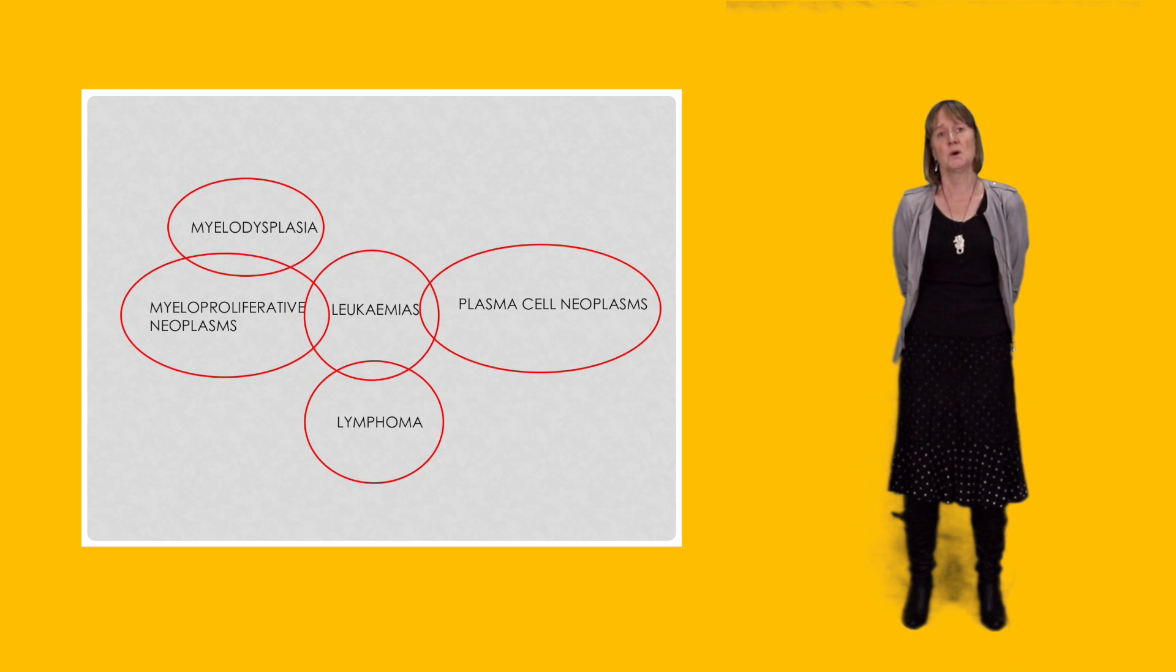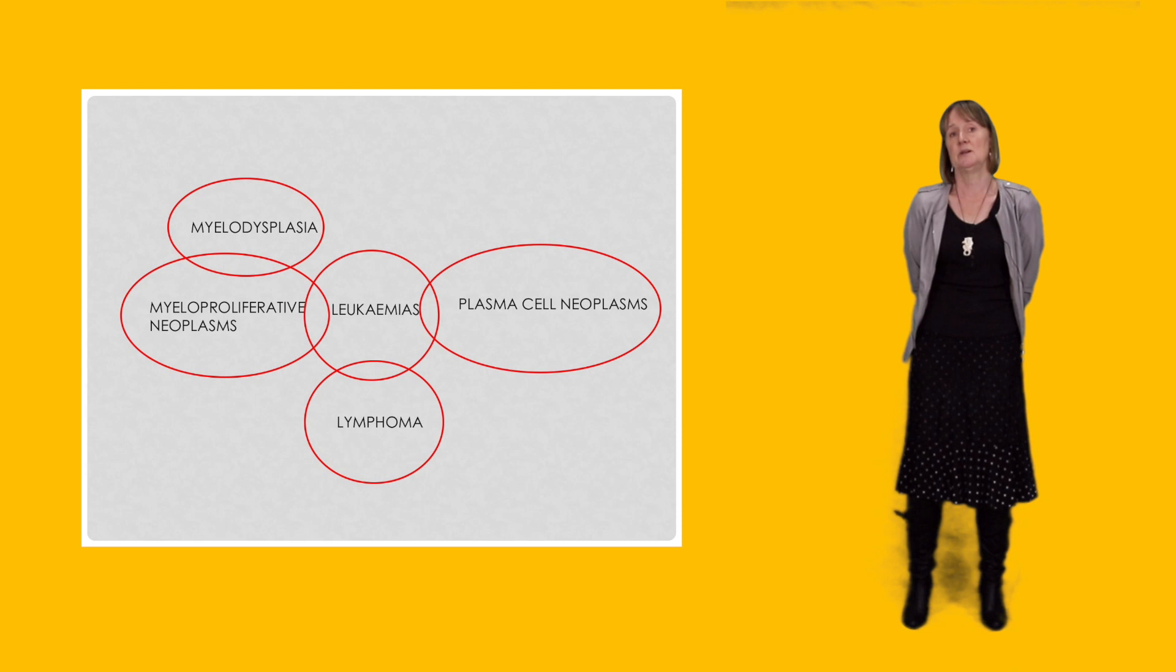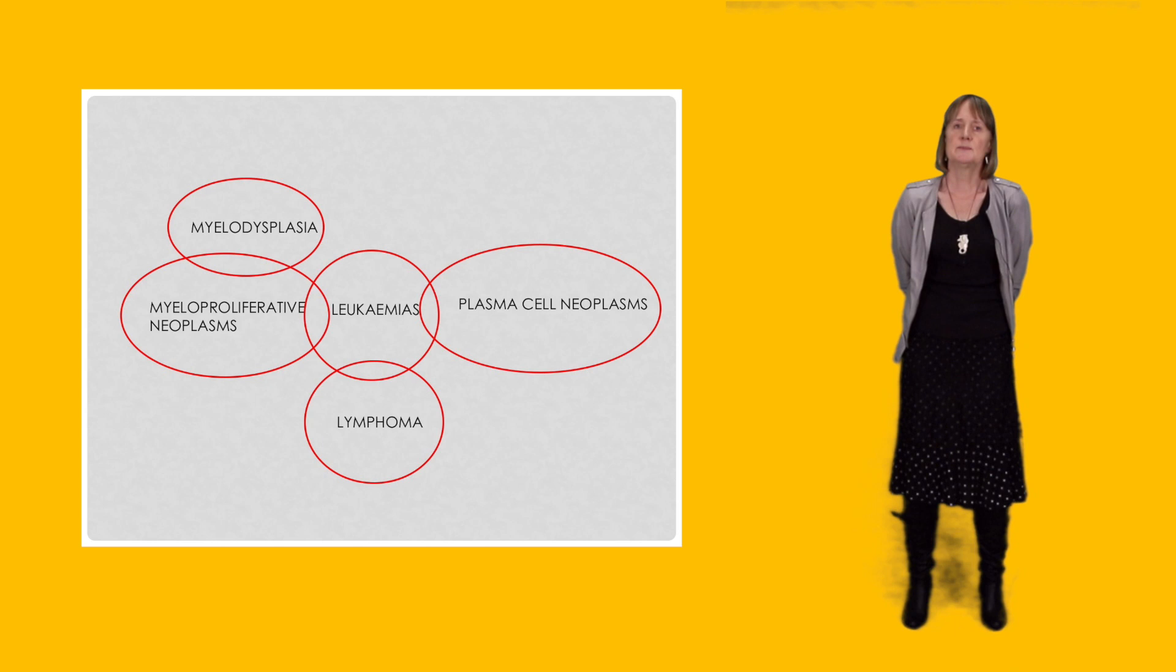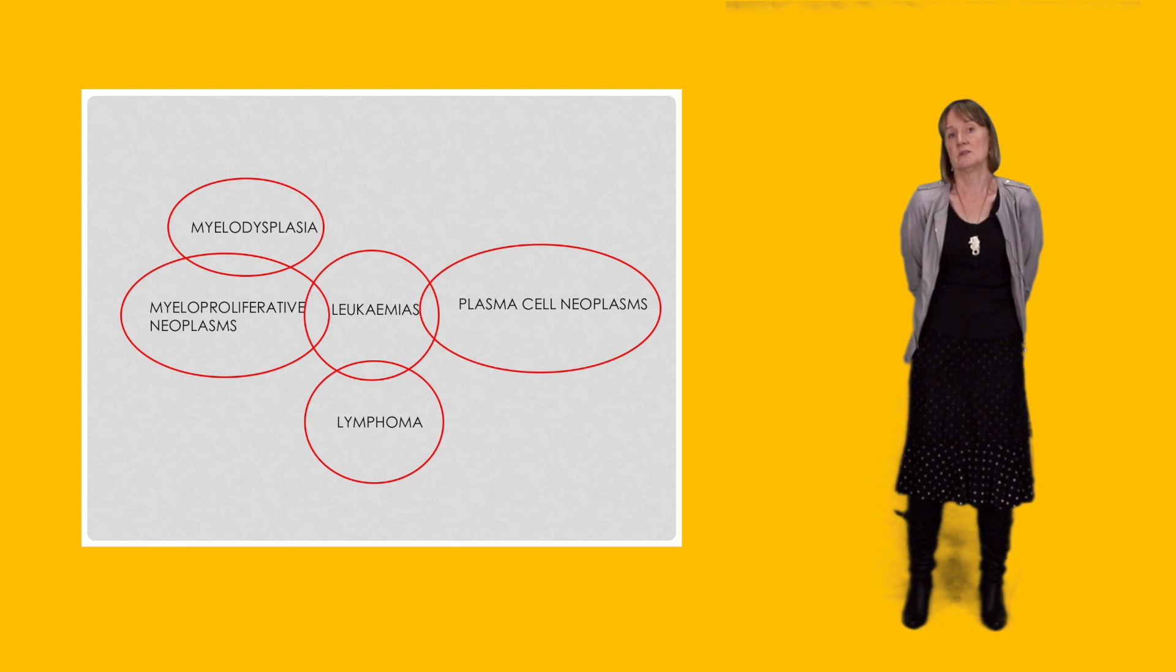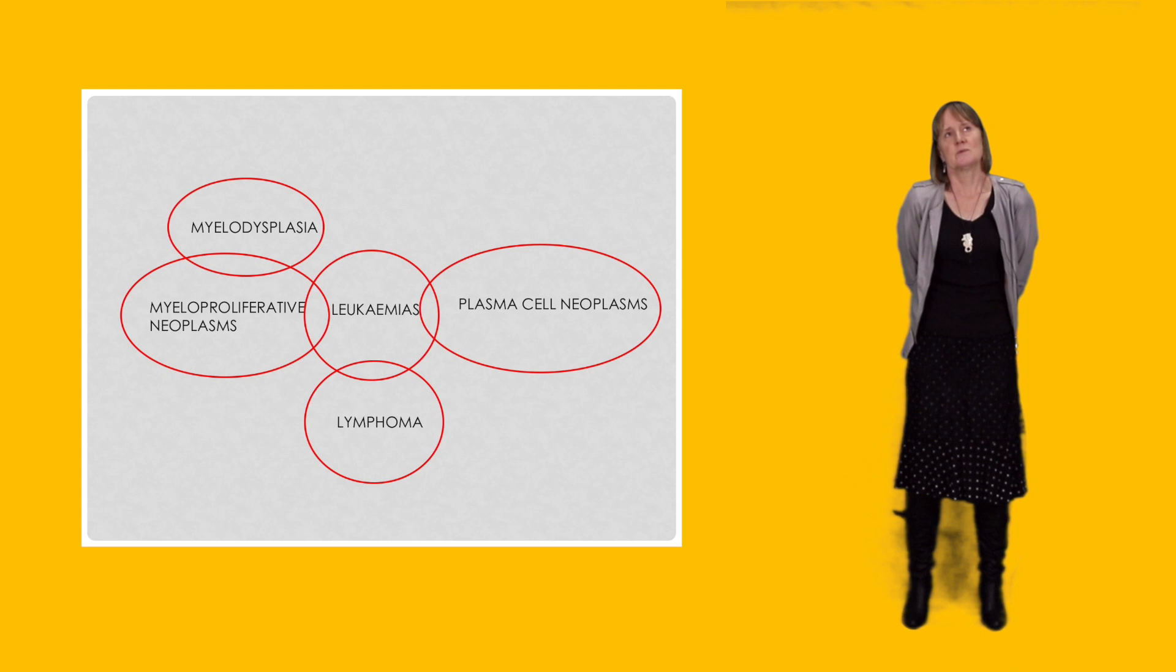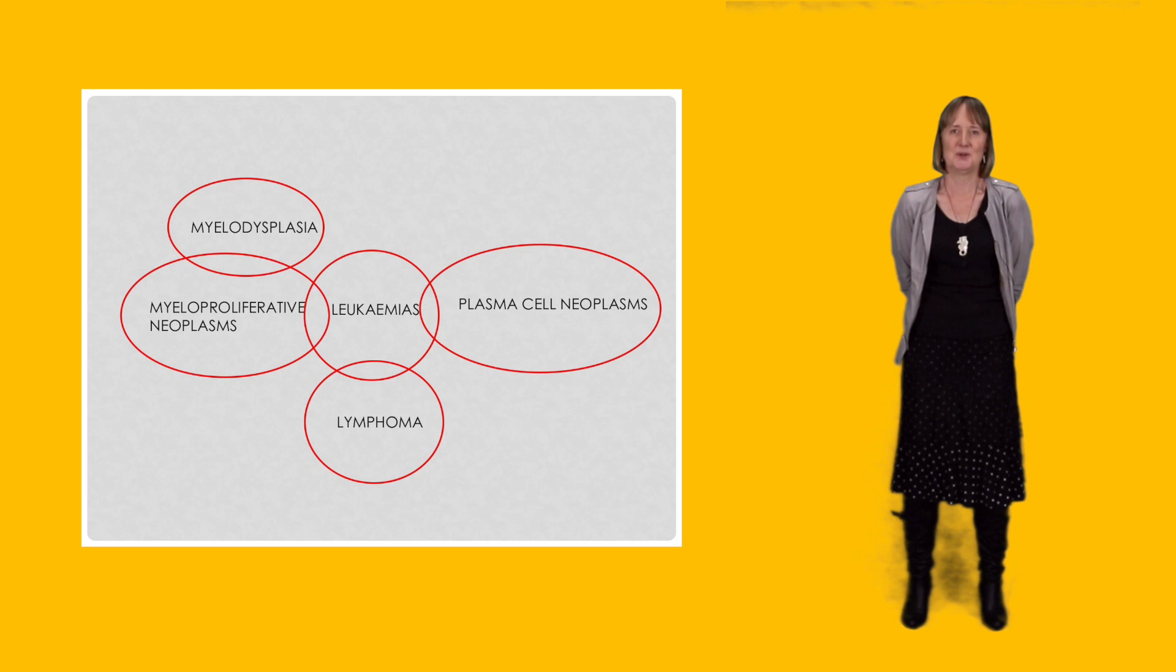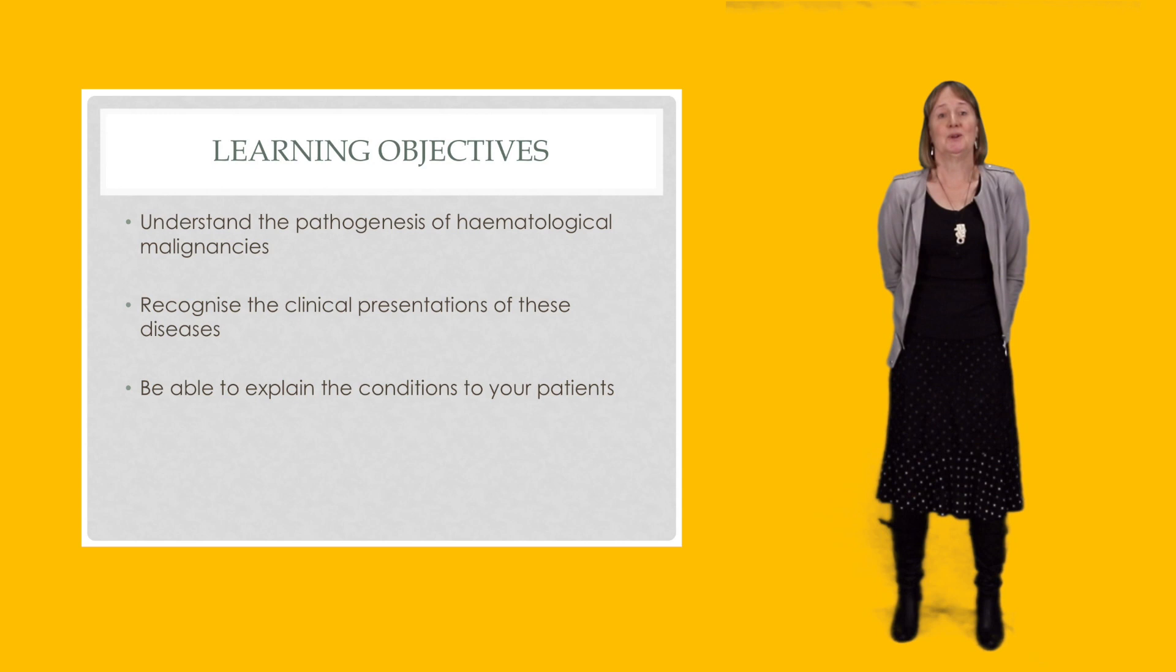You'll notice that the circles do overlap, and that's deliberate. Because there are overlap conditions. There are conditions that don't exactly fit into say myelodysplasia or myeloproliferative disorders, and they would be labeled as myeloproliferative stroke myelodysplastic. And similarly, some of the leukemias are really essentially the same as some of the lymphomas, so there's an overlap there. But this is just to give you a full taste of what's coming with the rest of this particular part of the course, so that you know where you're up to.